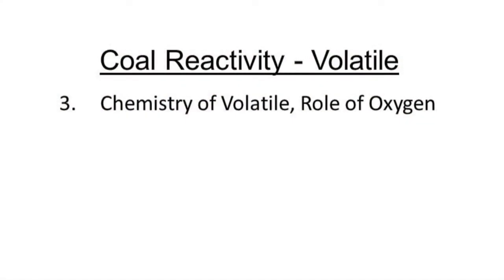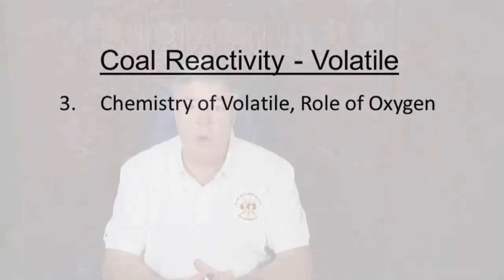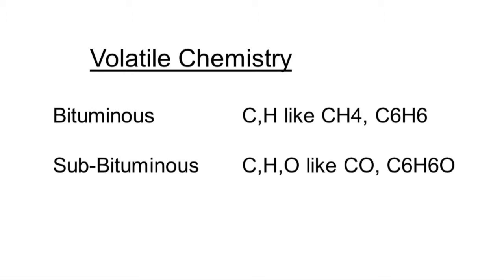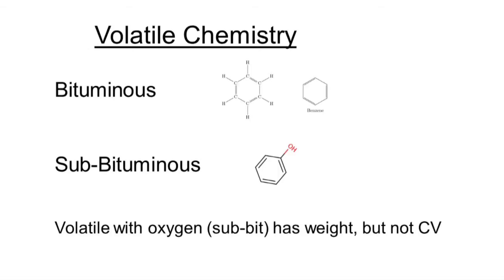A very high rank bituminous or anthracite-type coal, when we look at the chemistry of the volatile matter, is mostly hydrogen and carbon — a hydrocarbon with very little oxygen involved. But if we look at the volatile matter of a sub-bituminous or lignite coal, we'll see things like carbon monoxide in the volatile matter, or phenols versus benzene in the aromatic rings — we'll actually see a more oxygenated volatile matter. This oxygen content in the volatile matter adds to the weight of the volatile but doesn't necessarily add calorific value to it.